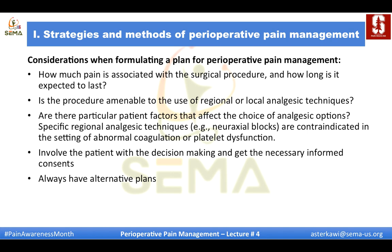When formulating a plan for perioperative pain management, consider: how much pain is associated with the surgical procedure and how long it's expected to last; whether the procedure is amenable to regional or local analgesic techniques; and patient factors affecting analgesic choices — for example, neuraxial techniques are contraindicated with abnormal coagulation or platelet dysfunction. Always involve the patient in decision-making, have alternative plans, and discuss with the surgeon.